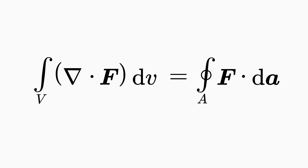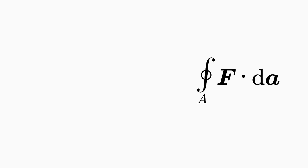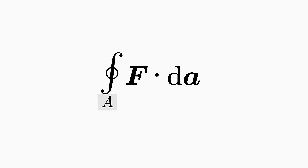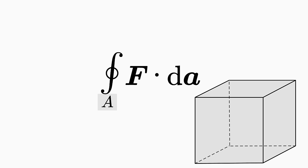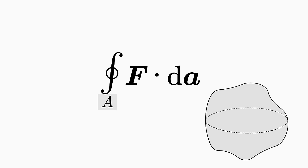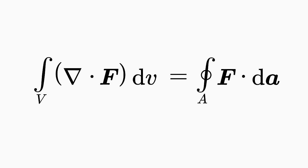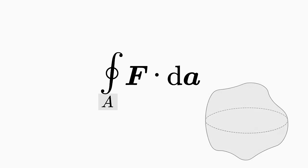This is what the divergence integral theorem looks like in its full splendor. First, let's look at the right-hand side of the equation. The A represents a surface enclosing any volume, for example, the surface of a cube, a sphere, or the surface of any three-dimensional body you can think of. The small circle around the integral indicates that this surface must satisfy a condition: the surface must be closed — it must not contain any holes — so that the equality is met mathematically. The surface A is thus a closed surface.